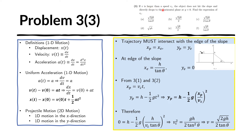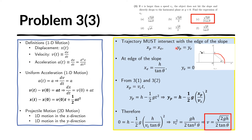For problem three we need to find the minimum speed v sub c such that if the object is moving at v sub c it will just overshoot the slope. Because v sub c is the minimum such speed, it corresponds to the minimum overshoot — the trajectory just barely clears the edge of the slope. That means the trajectory must intersect the slope at exactly that edge point, so the x-coordinate of the trajectory must equal the x-coordinate of the slope edge, and likewise for the y-coordinate.